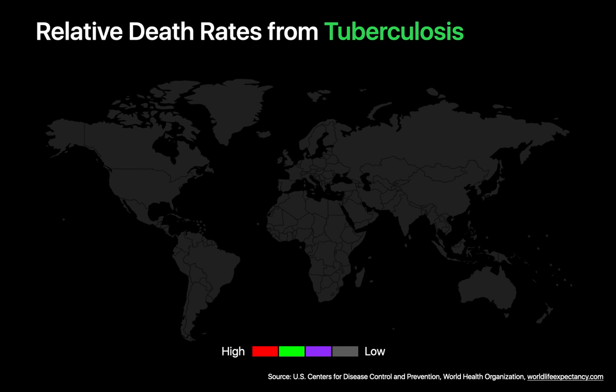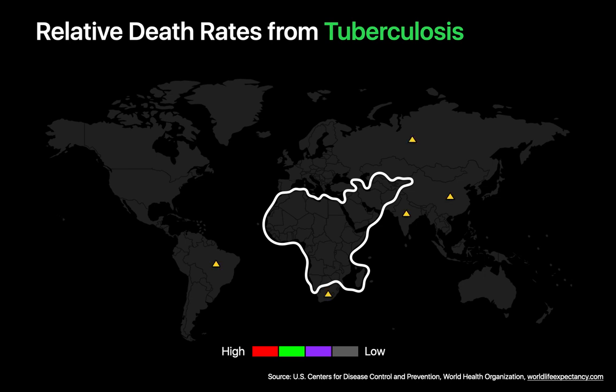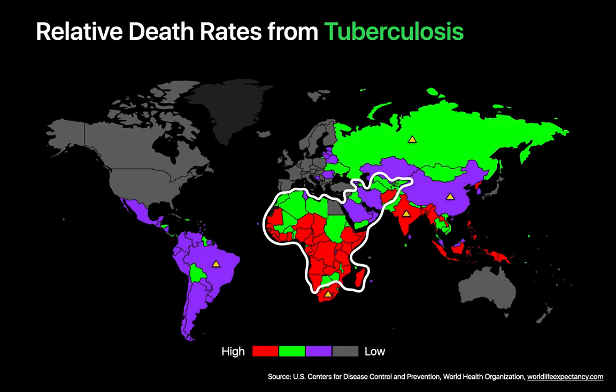We'll begin with TB and look at how relative death rates compare between low-income countries — particularly those in Africa and Central Asia — versus high-income countries in regions like the US, Canada, Western Europe, Australia, and Japan, and also versus the middle-income BRICS countries: Brazil, Russia, India, China, and South Africa. Relative death rates from TB in Africa are substantially higher than in most of the world, and at 127 deaths per 100,000 people, is over 1,000 times higher than in the United States.